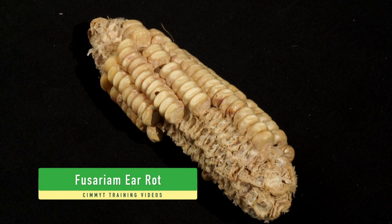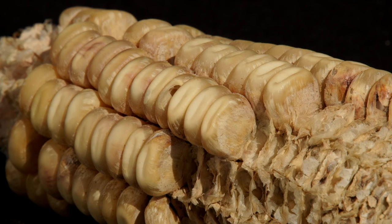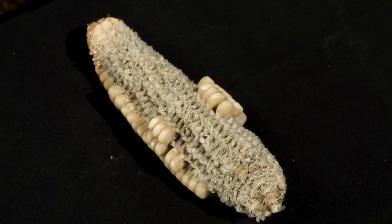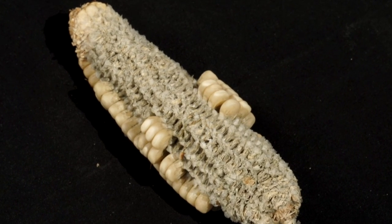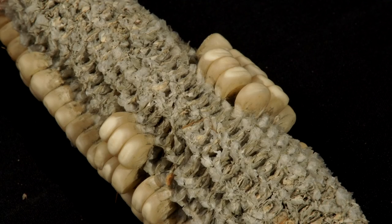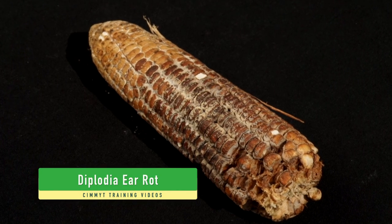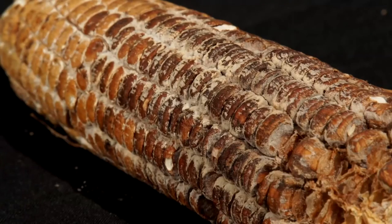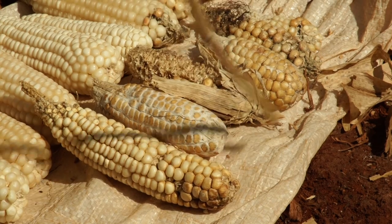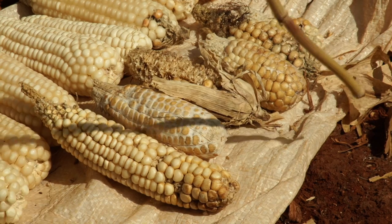Fusarium ear rot is characterized by a pinkish tinge and cobber symptoms on the grain. Aspergillus ear rot is characterized by the proliferation of dark green fungal growth on the cob. Diplodia ear rot is characterized by dense white mycelial growth between kernels. The total number of ears affected by all ear rot should be recorded at harvest in both nitrogen-stressed and optimal trials.